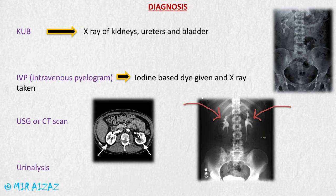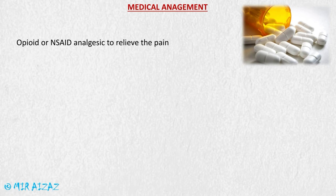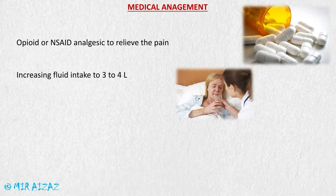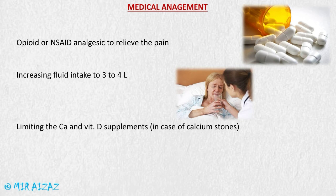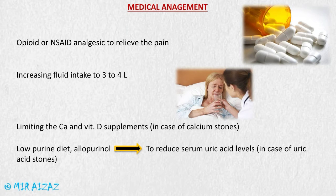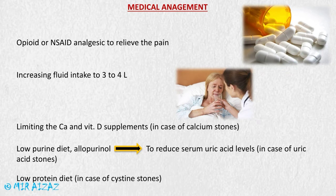For medical management, opioid or non-steroidal anti-inflammatory analgesic agents may be given for pain relief. NSAIDs have the added benefit of reducing inflammation and may help stone passage. Fluid intake should be increased to three to four liters per day to dilute urine, prevent further stone formation, and increase hydrostatic pressure behind the stones. Calcium and vitamin D supplements should be limited in patients with calcium stones. Allopurinol can reduce serum uric acid levels for uric acid stones, and a low-protein diet is advised for cysteine stones.